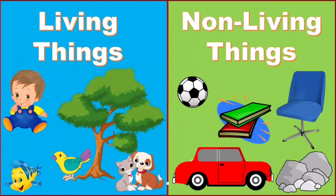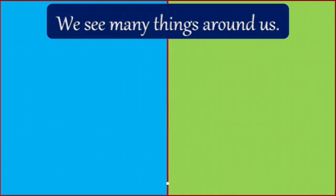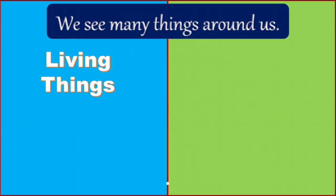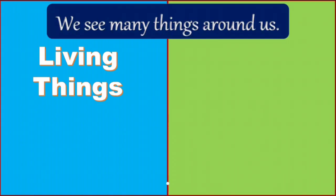Living things and non-living things. We see many things around us. In the planet we live, from mountains to oceans, from plants to animals. There are many things in our surroundings which can be categorized into two: living things and non-living things.